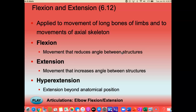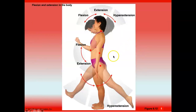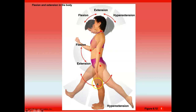Extension is straightening your arm, and hyperextension is going beyond anatomical position. In anatomical position, the arms, legs, and head are all extended. Moving your leg forward is flexion; moving your leg backward is hyperextension.